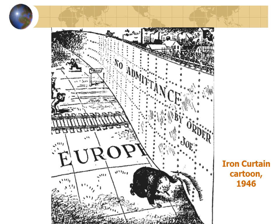A cartoon shows Winston Churchill kneeling down with his characteristic cigar, peeking underneath the Iron Curtain that separated Western and Eastern Europe, with 'the order of Joe' referring to Joseph Stalin.